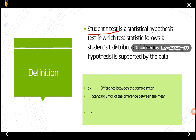Coming to the definition: the Student t-test is a statistical hypothesis test in which the test statistic follows a Student's t-distribution if the null hypothesis is supported by the data. Here we test the hypothesis — there is a null hypothesis, and the Student t-test finds out the distribution to determine whether it supports the data or not.